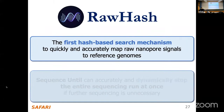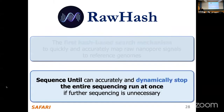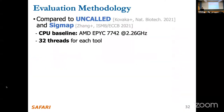This is essentially what we're proposing in RawHash. We also have another contribution — sequence-until — but due to time limits I won't describe it here; interested viewers can look at the paper. Now let me show some results. We compare RawHash to state-of-the-art works: UnCold and SIGMAP.